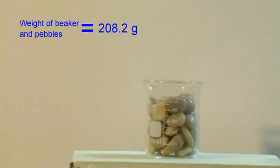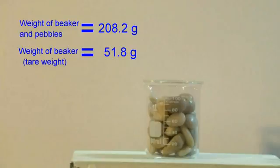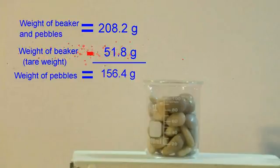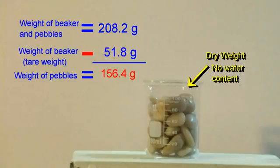The weight of the beaker and the pebbles is 208.2 grams. The weight of the beaker by itself, which is our tare weight, is 51.8 grams. If we subtract that from the weight of the beaker and the pebbles, then we get the weight of the pebbles by themselves, which is 156.4 grams. We would call this the dry weight of our sample because there's no water or moisture content that we have to worry about. All the pore space is filled with air.